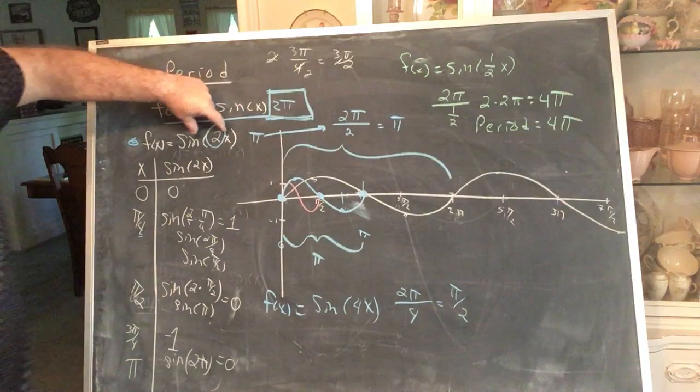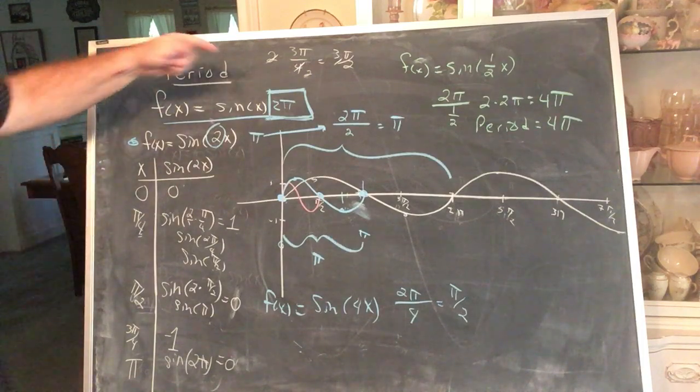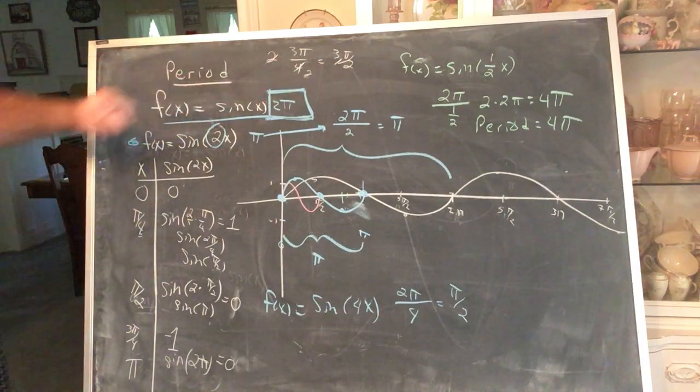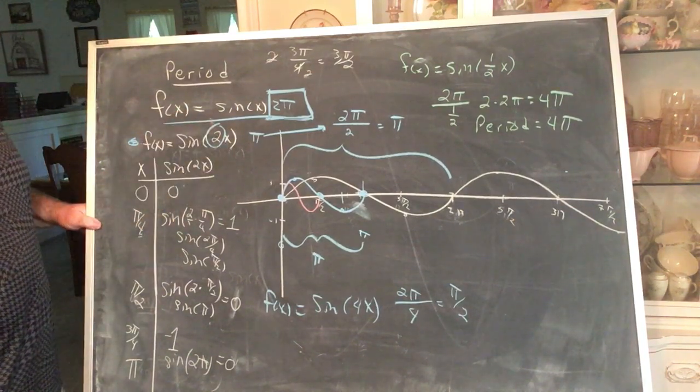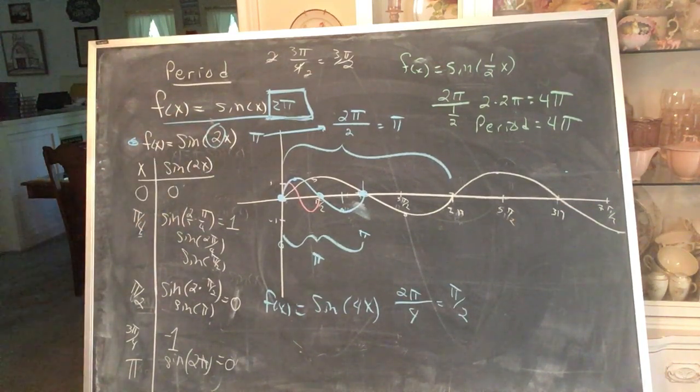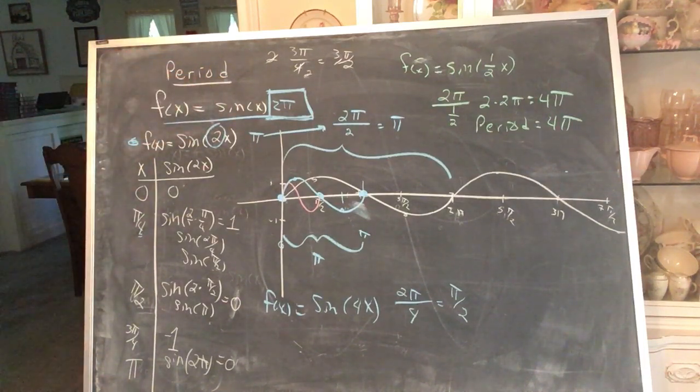So given any such function, you should be able to identify the amplitude. Each of these graphs has amplitude 1. And you should be able to identify the period. The period is found by dividing by the coefficient inside the parenthesis. Take this period of the basic function and divide by the coefficient inside the parenthesis.